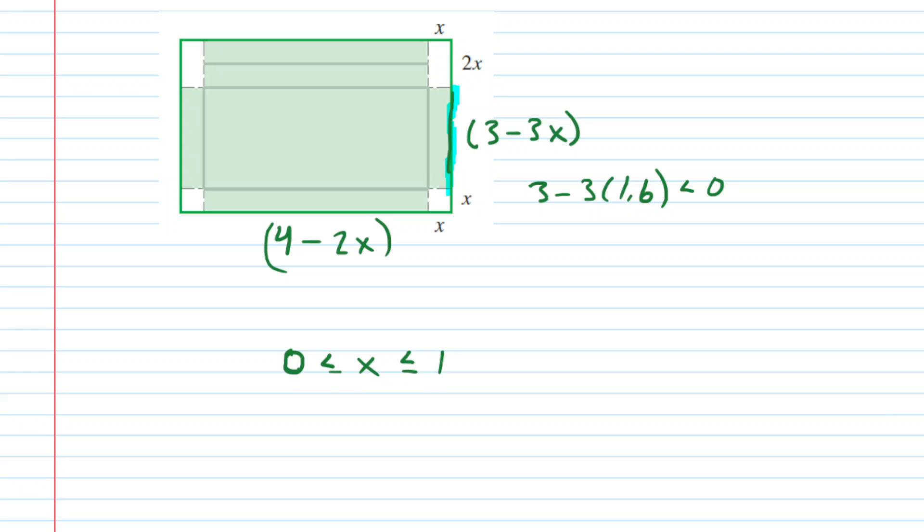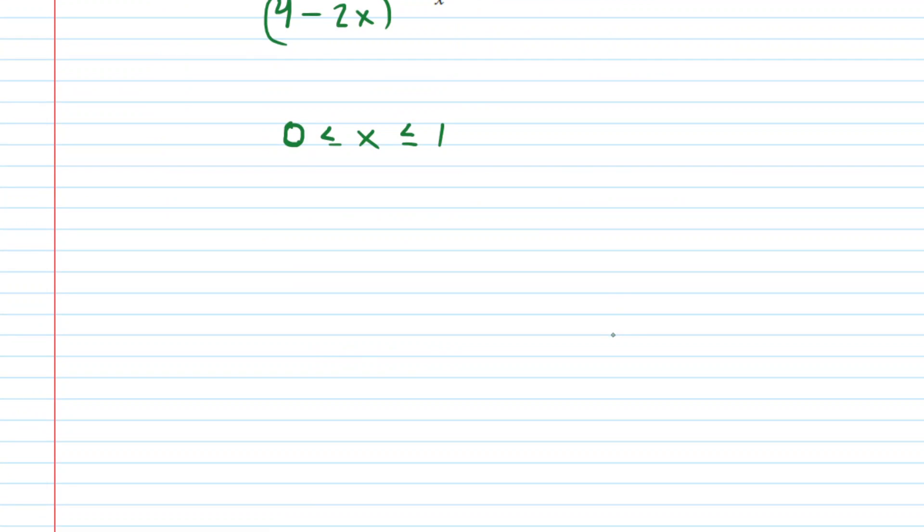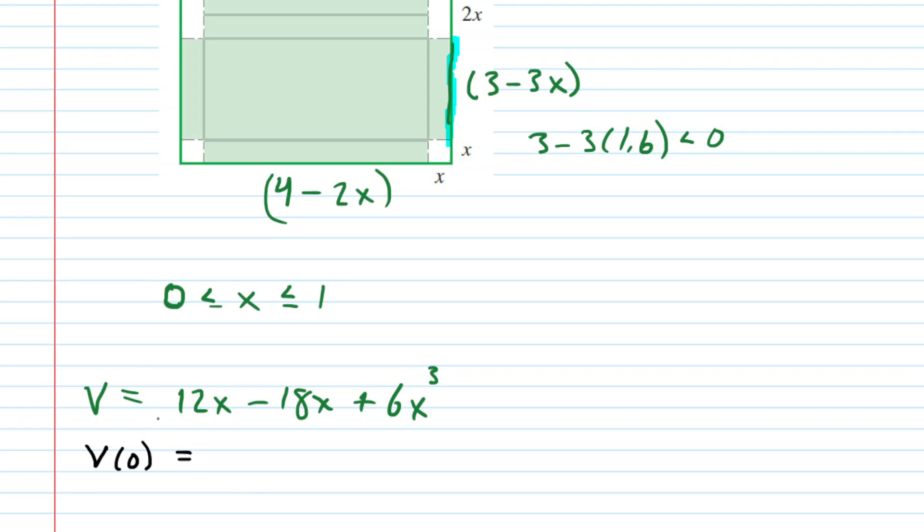And then we've shown also that the x has to be less than or equal to 1. So we have this restriction on x, and what we can do is actually take these endpoints and plug them in. So if you plugged 0 for example in for the volume then you would refer back to your volume equation, which we have repasted right here. And if you plug in 0 you will get a volume of 0. And then similarly if you plug in the endpoint of 1 you would get a volume of 0. So those volumes would be of boxes that don't even really exist.